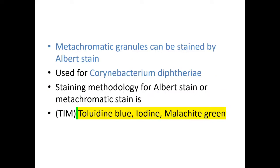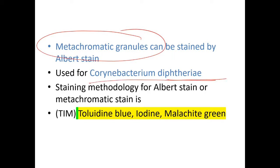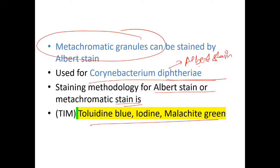Metachromatic granules are found in Corynebacterium diphtheriae. The staining method used is Albert stain, which is the metachromatic stain specific to Corynebacterium diphtheriae. In Albert staining, we first apply toluidine blue and iodine, followed by malachite green.